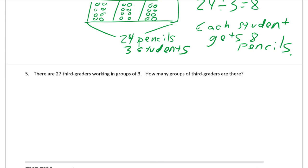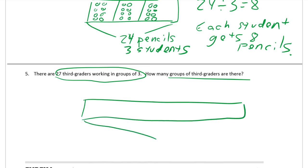Finally, there are 27 third graders working in groups of 3. How many groups are there? Tape diagram: we know there are 27 kids, we don't know how many groups, but we do know that there are 3 kids in each group.